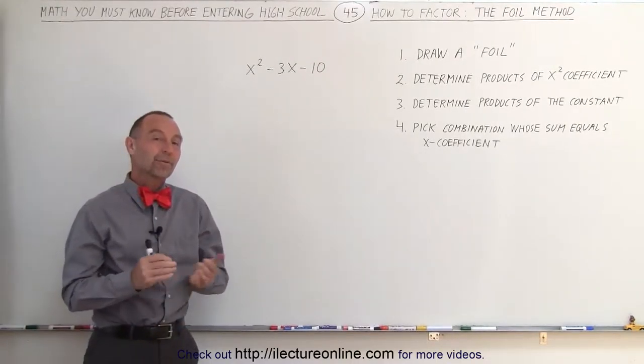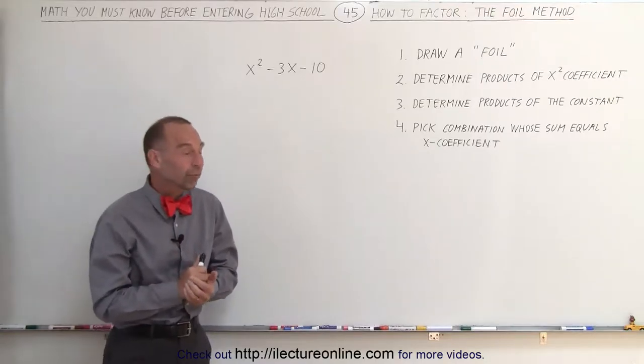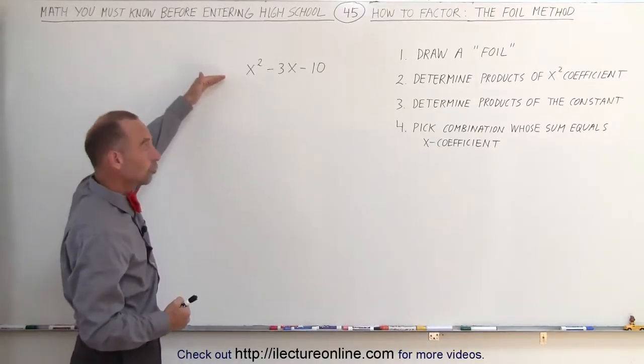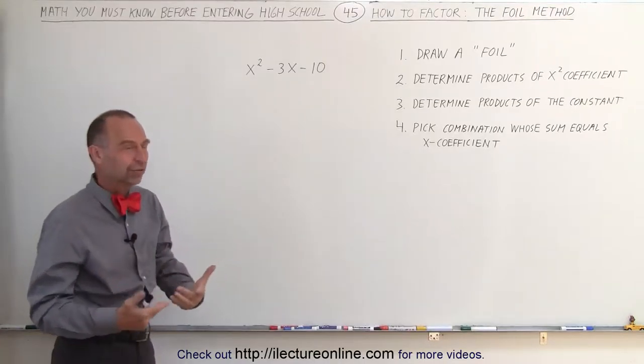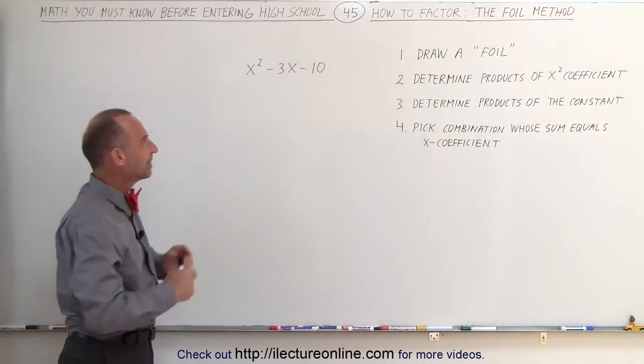Welcome to ElectronLine. For some of us who can see things more visually, we have a method called the FOIL method. It accomplishes the same thing. It takes a trinomial and puts it into a factored form, but it kind of leaves us in a more easily seen way.